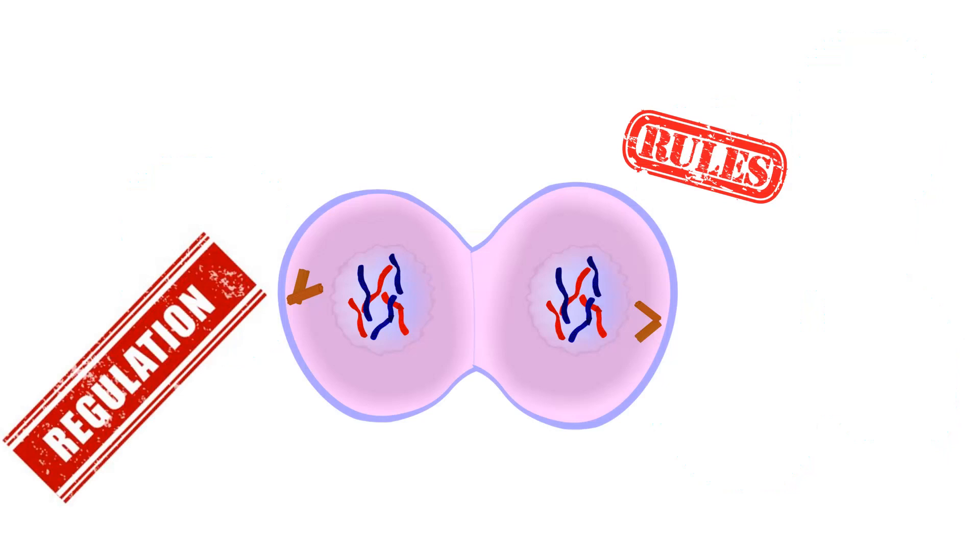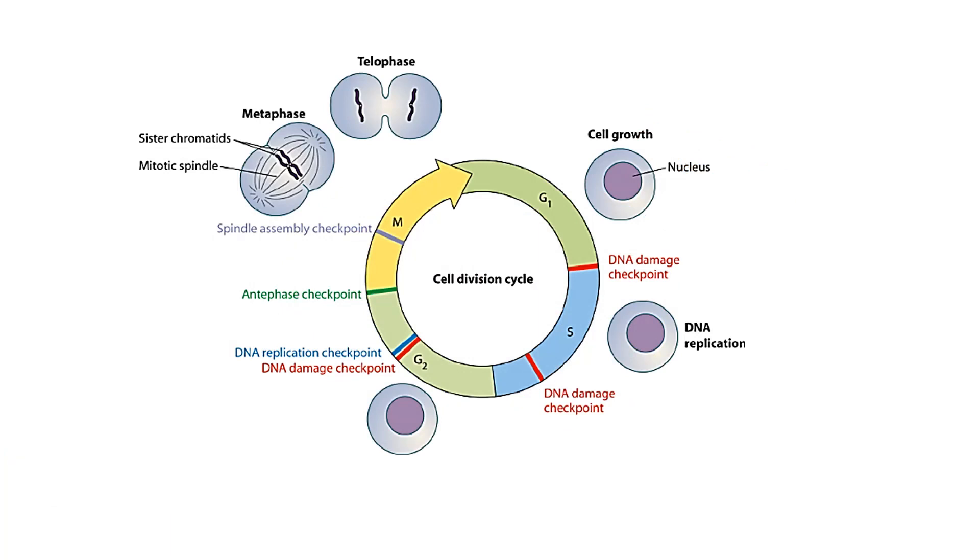So the cell cycle has to be controlled, regulated, and there should be certain rules by which the cells can divide and give rise to a daughter cell. These sets of rules are implemented by cell cycle checkpoints.